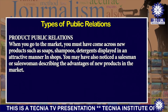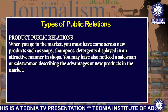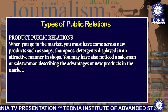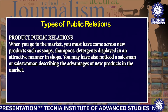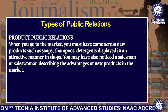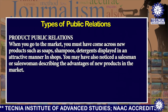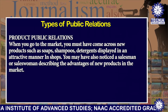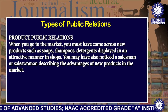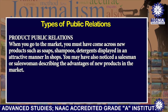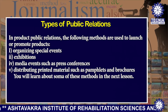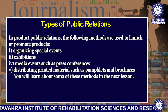The first type is product public relations. When you go to the market, you must have come across new products such as shampoo, soap, and detergent displayed in an attractive manner in the shop. You may have also noticed a salesman or saleswoman describing the advantages of a new product. In product public relations, the following methods are used to launch or promote products.